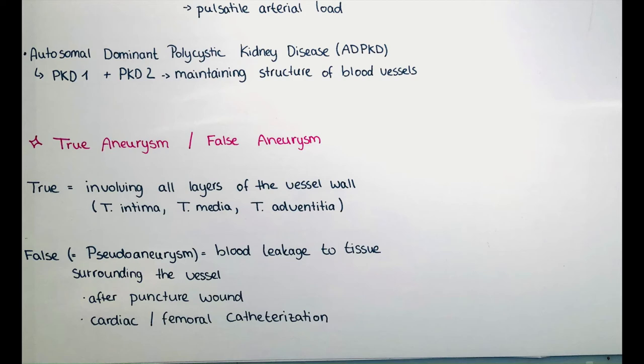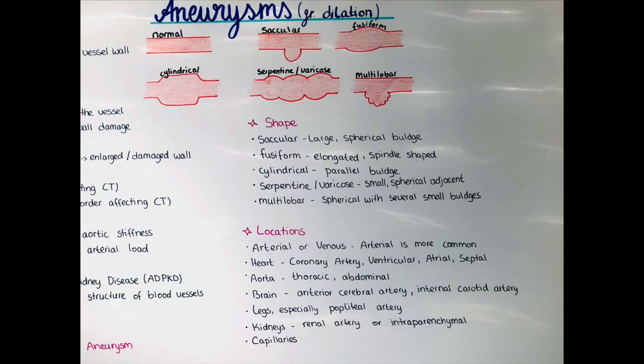Now I want to talk about the different shapes aneurysms can have. I drew them on the poster so you can compare them to the normal shape for visualization. This is a graphic representation, so under imaging techniques it will look different — just to give an idea. A saccular aneurysm is a large spherical shape, bulging out on one side of the blood vessel. When there is a saccular cerebral aneurysm it's also called a berry aneurysm, and this is a major cause of subarachnoid hemorrhages.